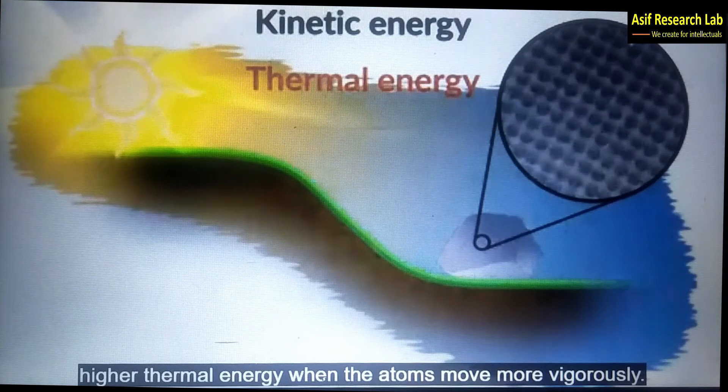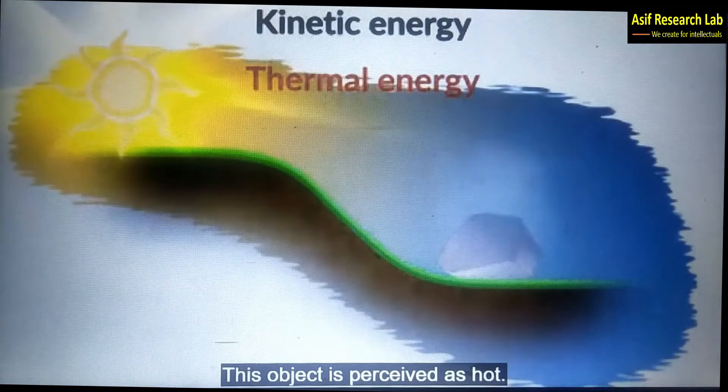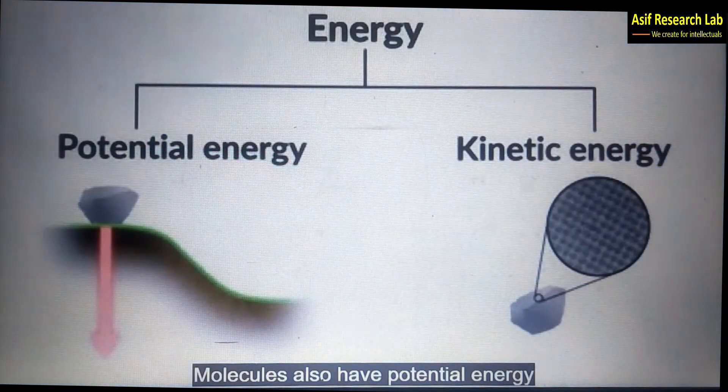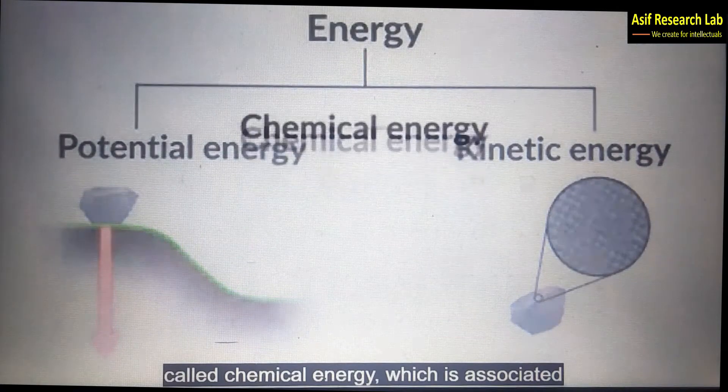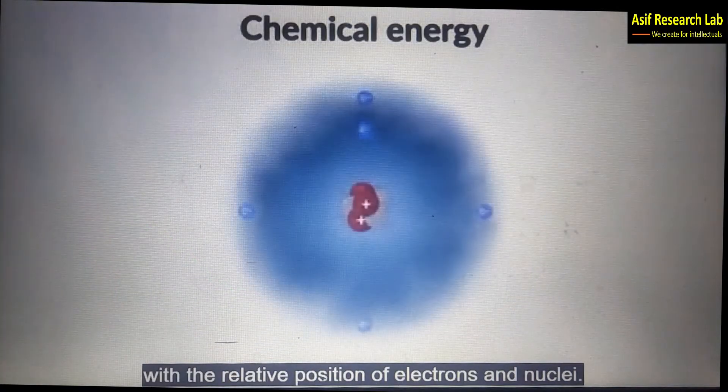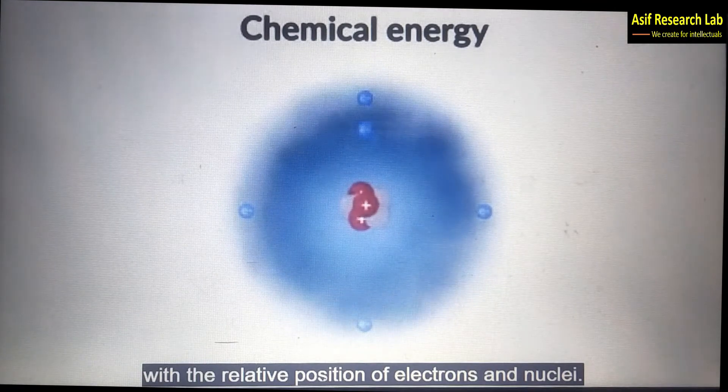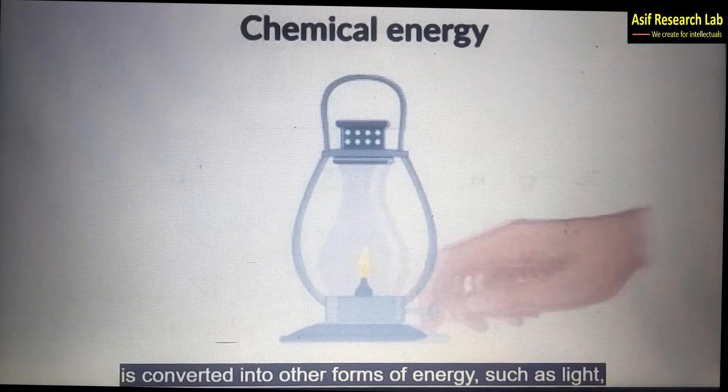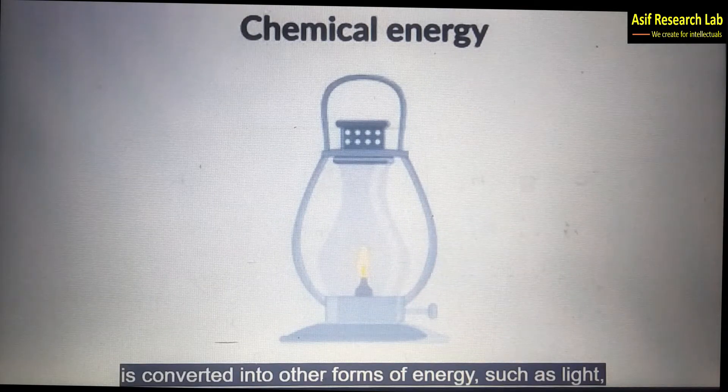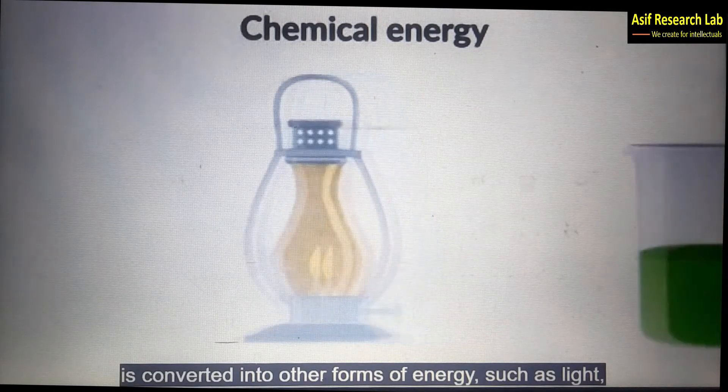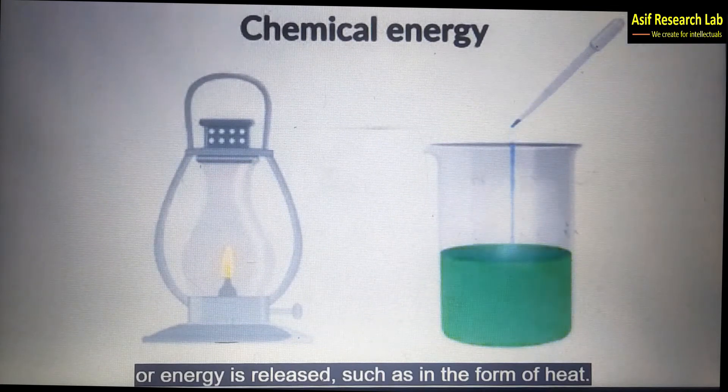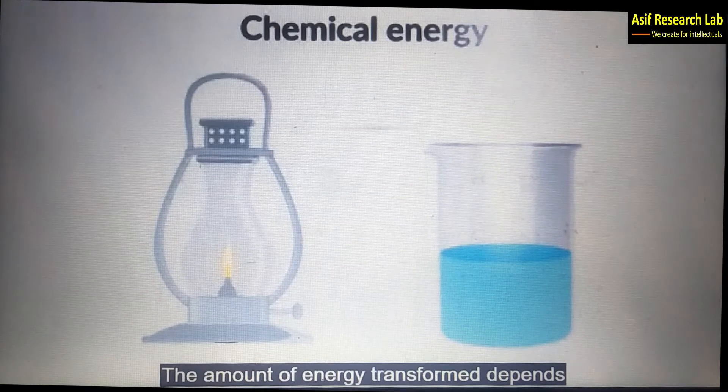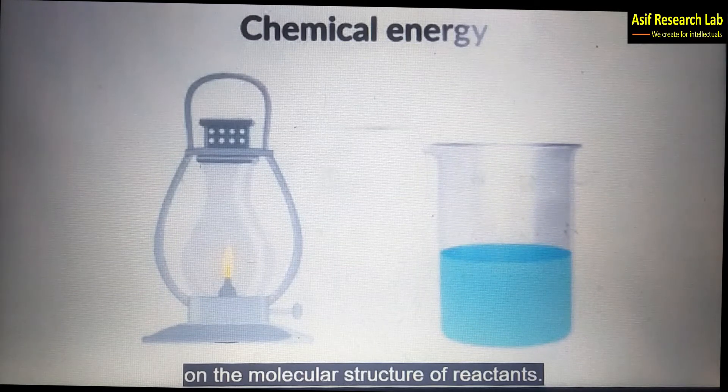An object has higher kinetic energy and consequently higher thermal energy when the atoms can move vigorously. This object is perceived as hot. Molecules also have potential energy called chemical energy which is associated with the relative position of electrons and nuclei. During a reaction chemical energy is converted into other forms of energy such as light, or energy is released such as in the form of heat. The amount of energy transformed depends on the molecular structure of the reactants.